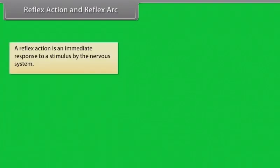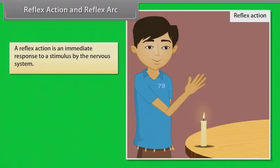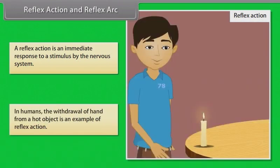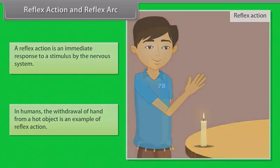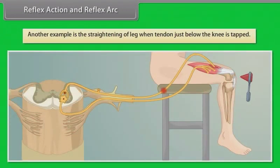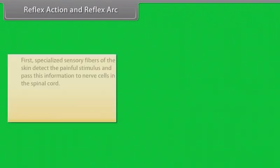A reflex action is an immediate response to a stimulus by the nervous system. In humans, the withdrawal of the hand from a hot object is an example of reflex action. Another example is the straightening of the leg when the tendon just below the knee is tapped.